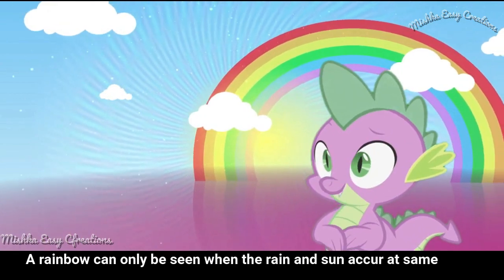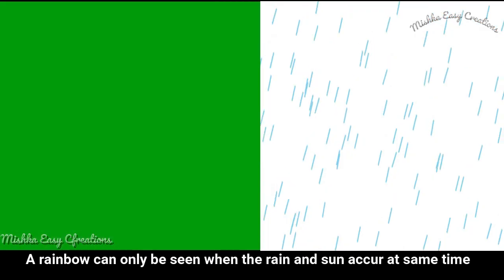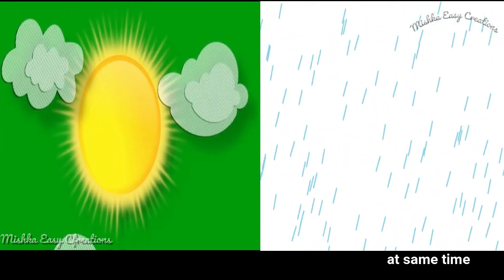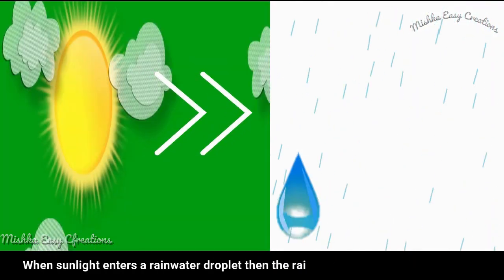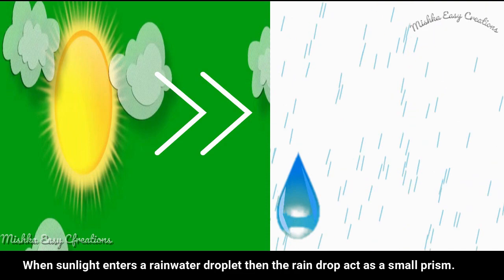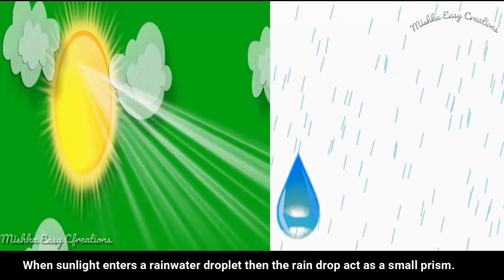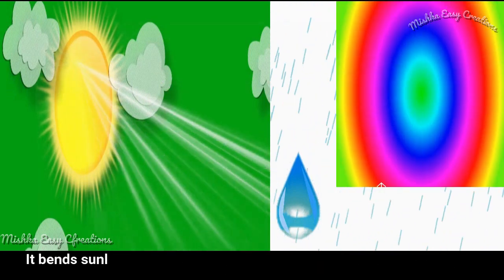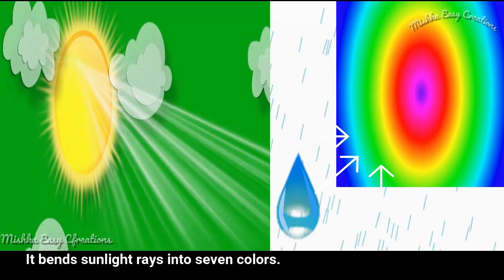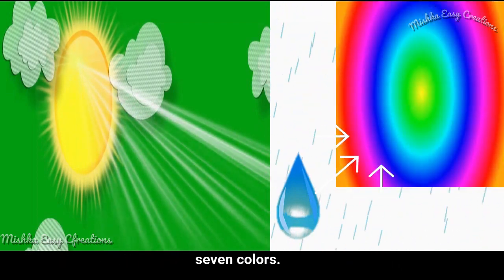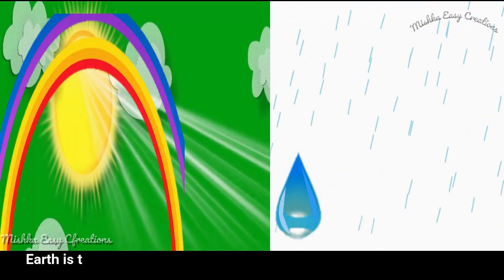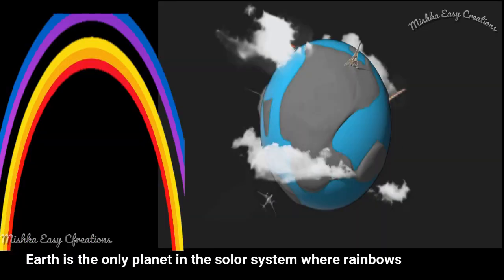A rainbow can only be seen when the rain and sun occur at the same time. When sunlight enters a rainwater droplet, the raindrop acts as a small prism. It bends sunlight rays into seven colors and that is when you get to see a rainbow. Earth is the only planet in the solar system where rainbows are possible.